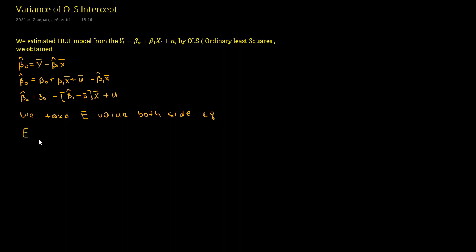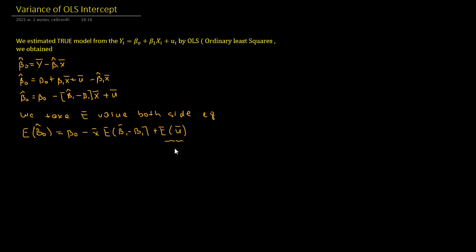We take the expected value of both sides. The expected value of beta 0 hat is equal to beta 0 minus x bar times the expected value of beta 1 hat minus beta 1, plus the expected value of u bar. And we know that the expected value of u bar is zero.